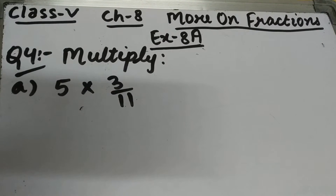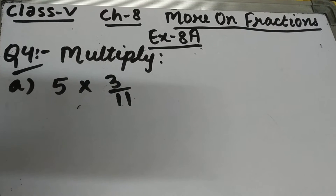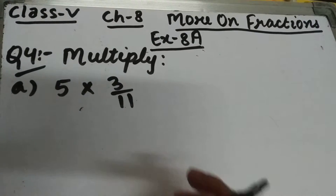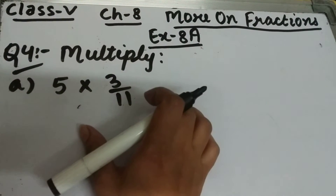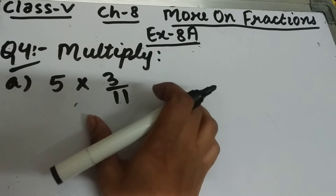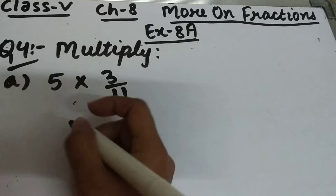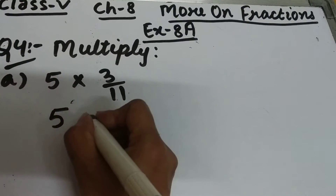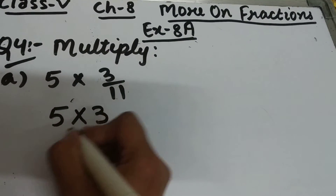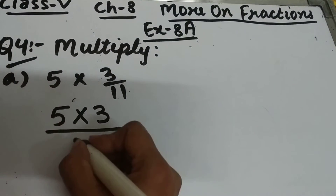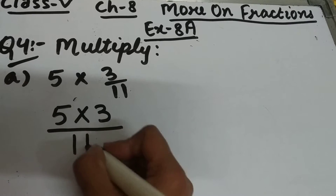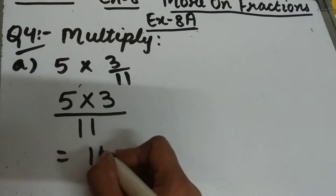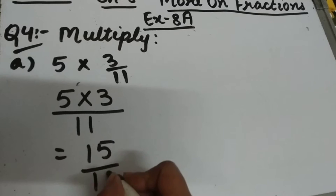Let's start question number 4 of exercise 8A. The question is multiply. Part a is 5 multiplied by 3 by 11. We multiply the whole number by the numerator of the fraction and keep the denominator as it is. So this will be 15 upon 11.